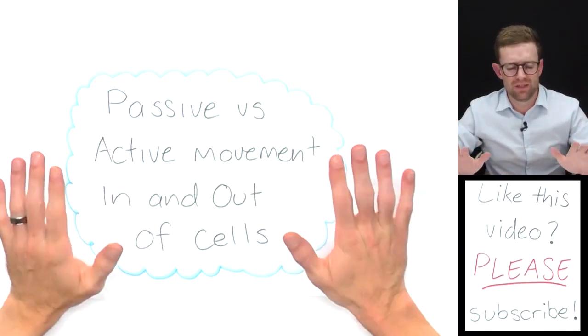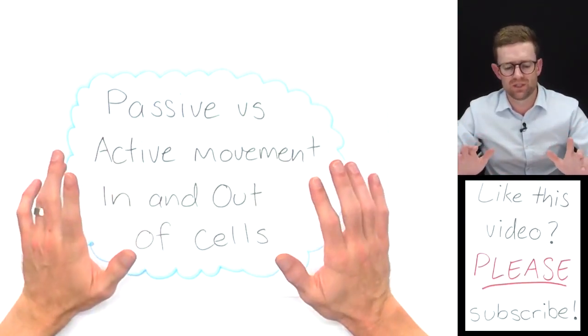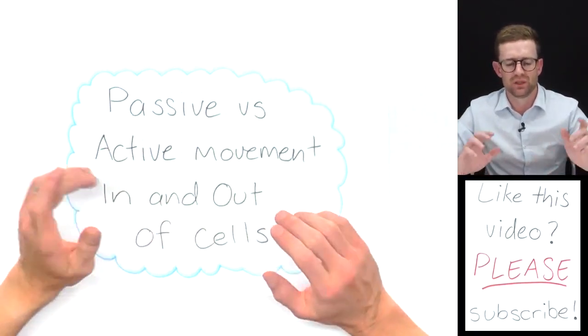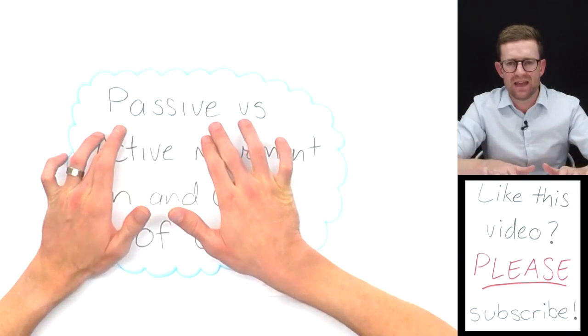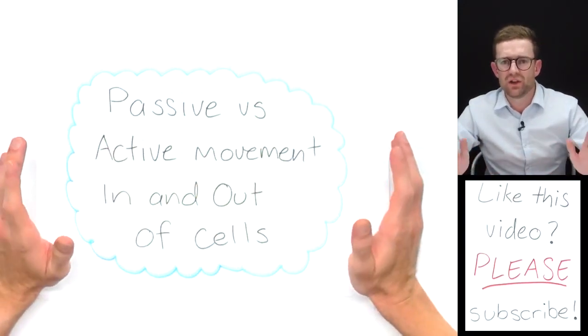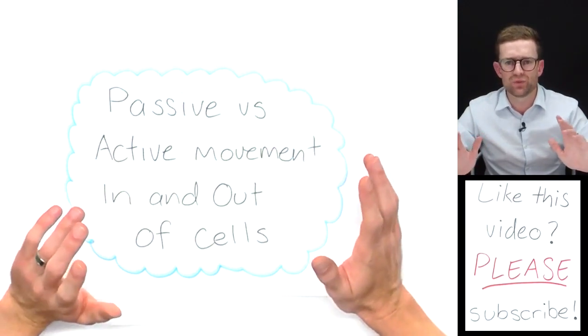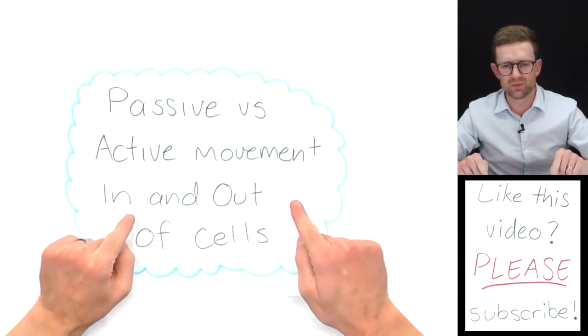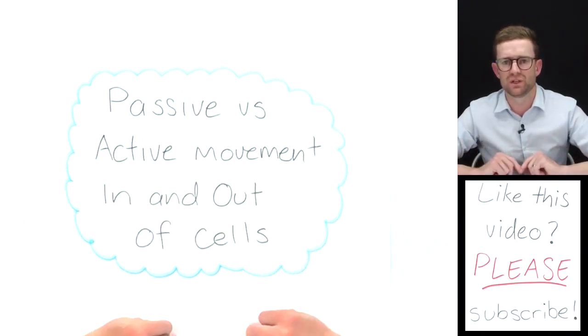Hopefully you know that there's a range of different processes by which things can move in and out of cells. The idea is that some of them are passive and some of them are active. This video will help you understand the difference between passive processes and active processes when it comes to moving in and out of cells.